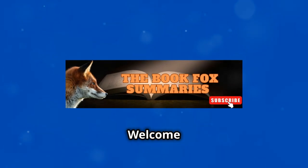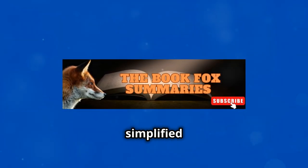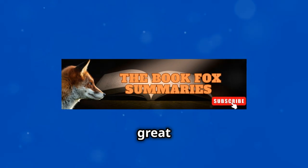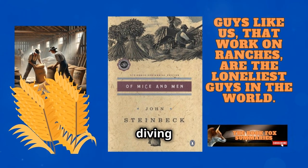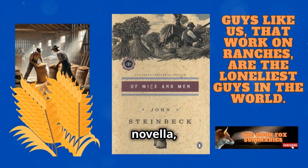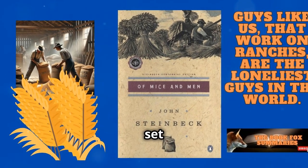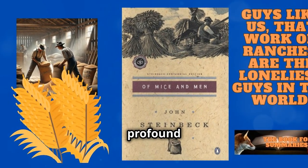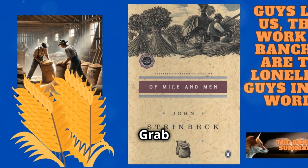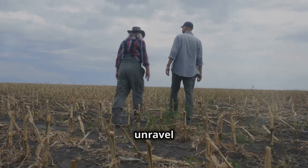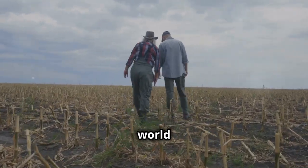Hello Book Foxes! Welcome back to At the Book Fox Summaries, where we bring you simplified summaries of great books for your busy lives. Today we're diving into John Steinbeck's classic novella, Of Mice and Men. This powerful tale set during the Great Depression explores profound themes of friendship, dreams, and loneliness. Grab a seat and let's unravel the compelling story of George and Lenny and the world they inhabit.